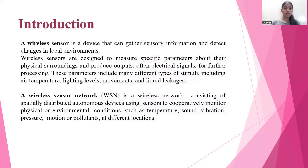A wireless sensor is a device that can gather sensory information and detect changes in local environments. Wireless sensors are designed to measure specific parameters about their physical surroundings and produce outputs, often electrical signals for further processing. These parameters include many different types of stimuli including air temperature, lighting levels, movements, and liquid leakages. A wireless sensor network is a wireless network consisting of specially distributed autonomous devices using sensors to cooperatively monitor physical or environmental conditions such as temperature, sound, vibration, pressure, motion, or pollutants at different locations.